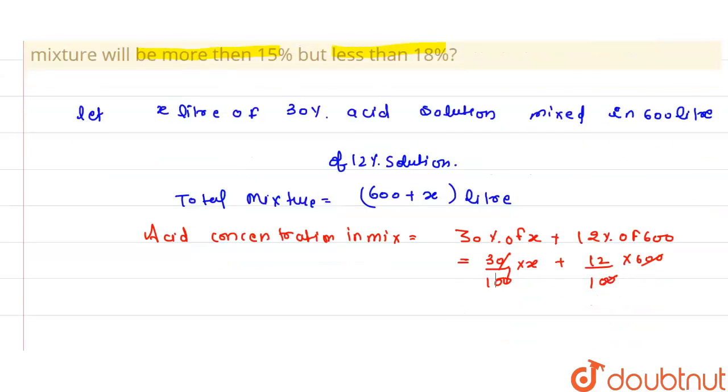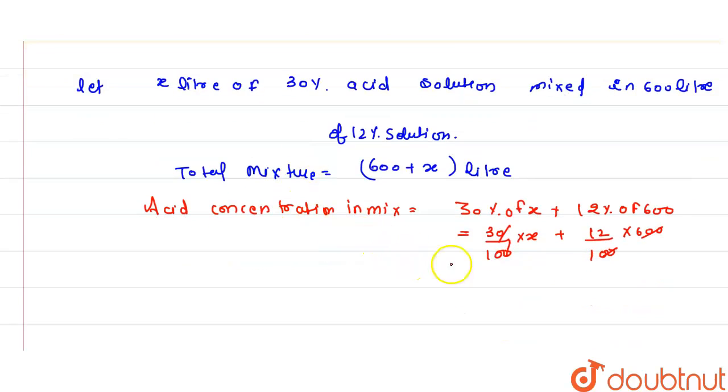have the value 30/100 x plus 72. Now this value, according to the question, is greater than 15% of total mixture and less than 18% of total mixture. Now compare the value which